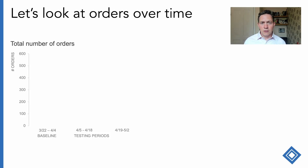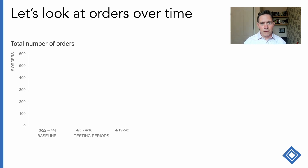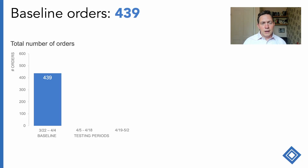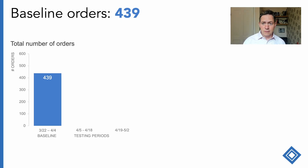If we take a look at those orders now, we have three distinct buckets — three blocks of two-week periods — starting off with the baseline period, which was from the 22nd of March to the 4th of April, before then the spending increase across those two separate two-week blocks. For the baseline, looking back at the past, we had 439 orders, which is pretty consistent with prior weeks and the same period in prior years too.